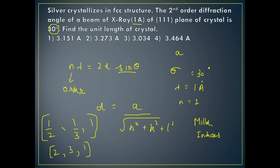In this problem the plane is given as (111), so h, k, l are all equal to 1. Substituting into the d-spacing formula, d comes out to be a divided by root 3. Now putting the values into Bragg's law: n=2, lambda=1 Angstrom, so 2 × 1 Angstrom = 2 × (a/√3) × sine 30.